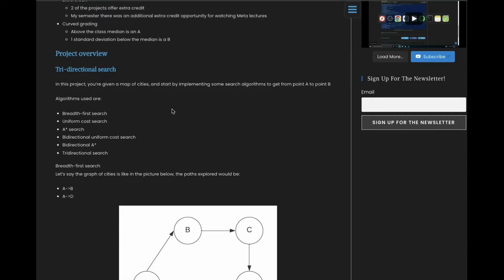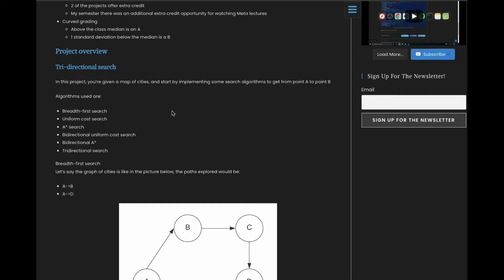Projects: the first project is tri-directional search. In this project, you get a map of cities and you're supposed to program some algorithms for it, namely these seven here: breadth-first, uniform cost, A-star, the bidirectional form of uniform and A-star, and then tri-directional.